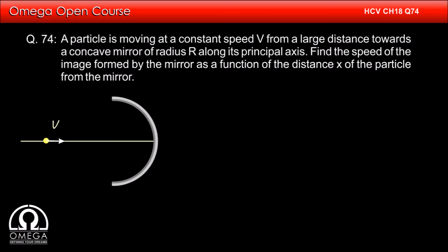A particle is moving at a constant speed capital V from a large distance towards a concave mirror of radius r along its principal axis. Find the speed of the image formed by the mirror as a function of the distance x of the particle from the mirror.